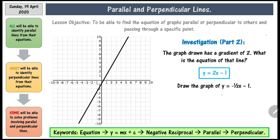It then goes on to ask: draw the graph of y equals negative one-half x minus 1. In order for you to do this, you are going to need to find the coordinates. You don't have to do every single one of them — I would advise you to just go from negative 3 to 3. Pause this video, find the coordinates, plot them on the graph, and then join them up with a straight line.